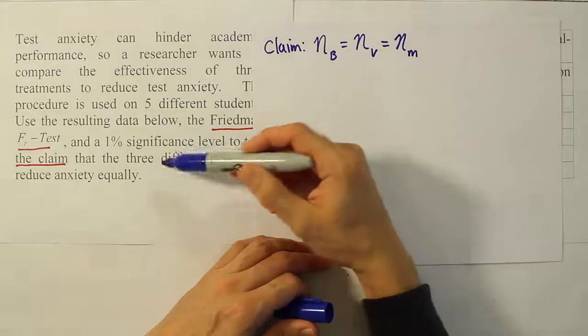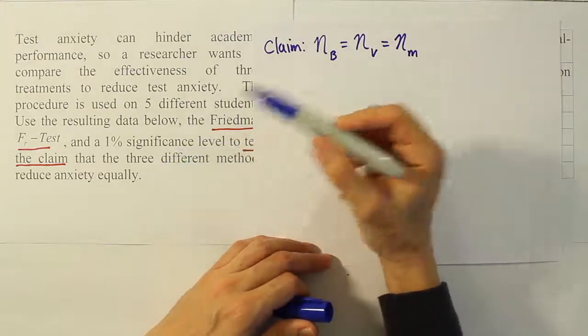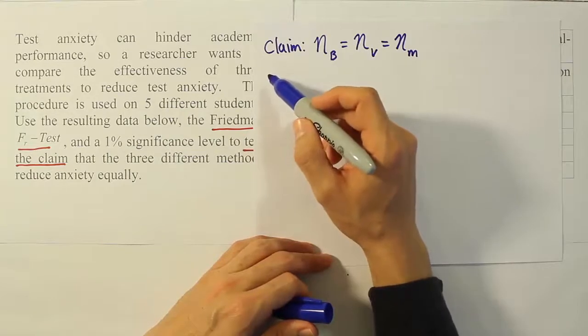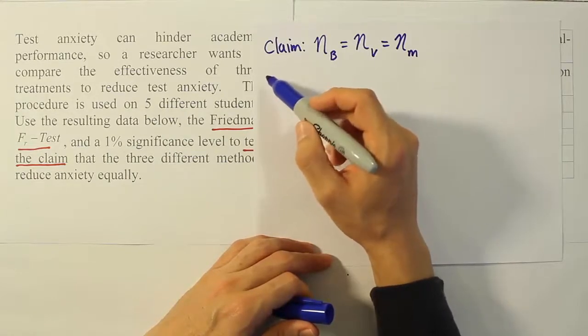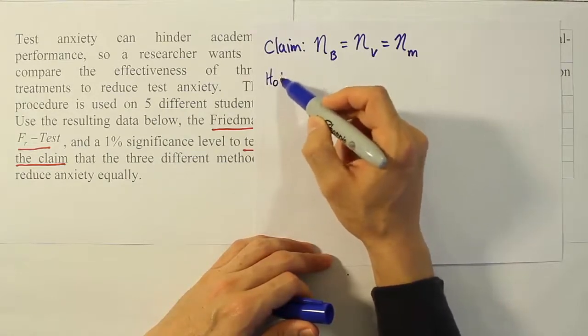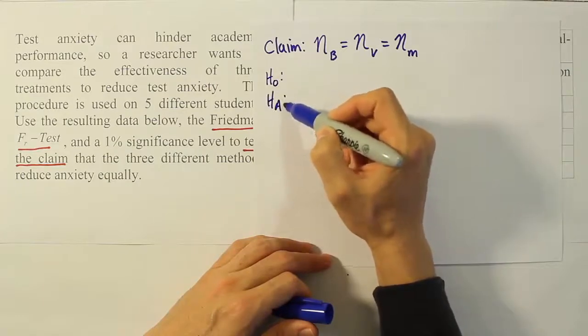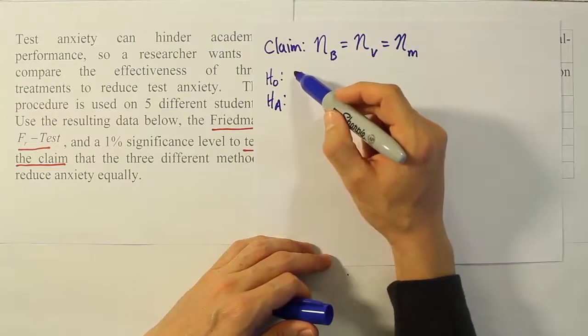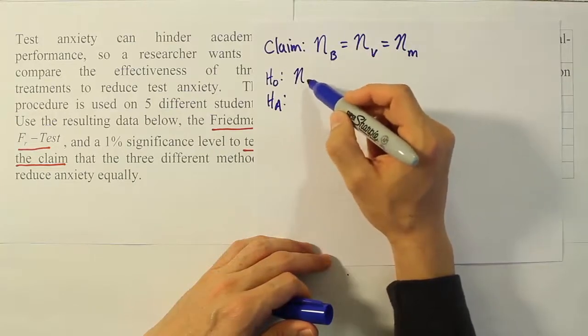So let's express that claim symbolically right now. The claim here is going to be that the median for the first treatment, and the first treatment here is going to be beta blockers, valerian roots, and meditation. So we'll use B for beta blocker, the second median will be for valerian root, and then the third median will be for meditation. We're saying that all three methods reduce anxiety equally, so the median reduction would be the same under the claim. We recognize that there's all equal signs, so that means the claim and H0 are the same.